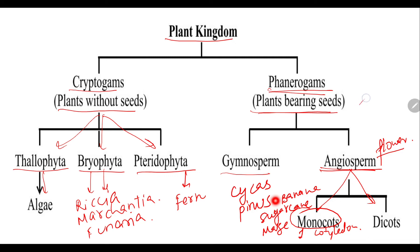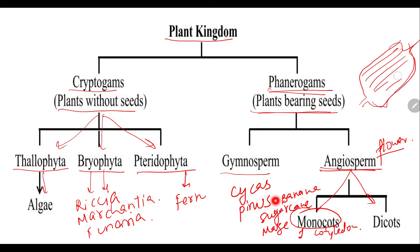In monocots, the leaves always have parallel venation. The roots present are fibrous kinds of roots, meaning all roots are of equal size. The roots are not present deep down into the soil and do not give complete support to the plant. These are the features seen in monocots.